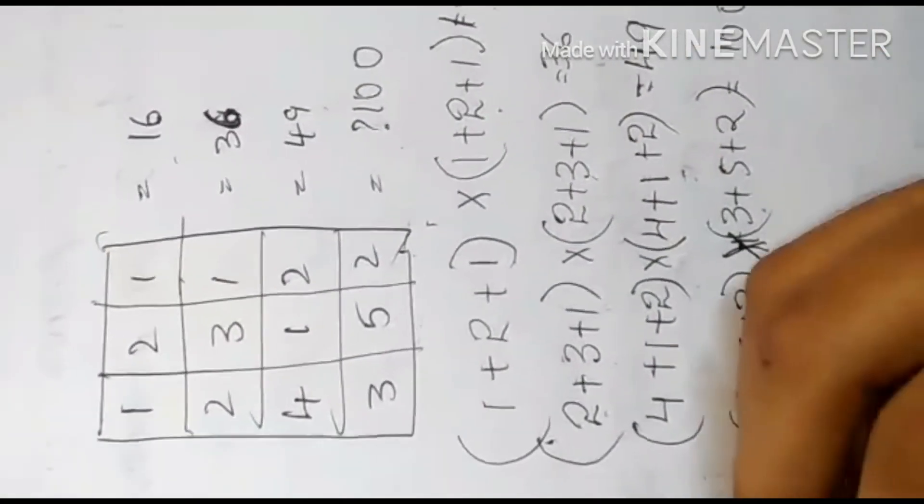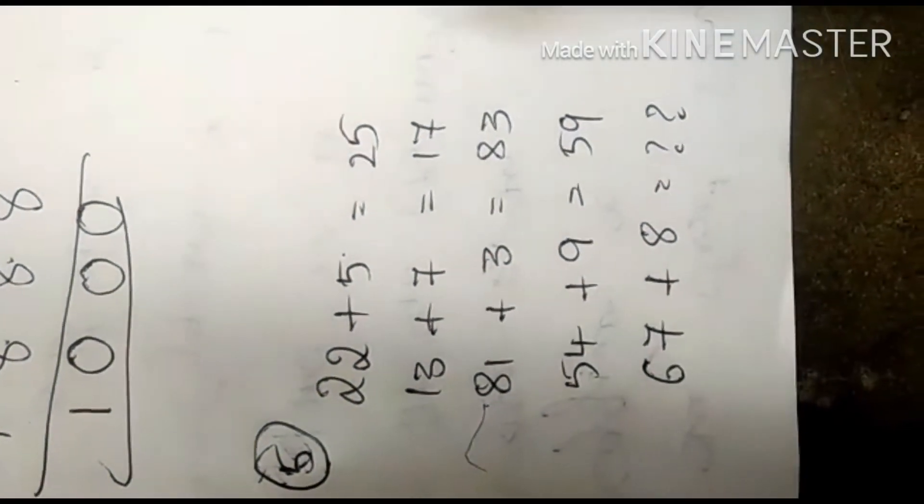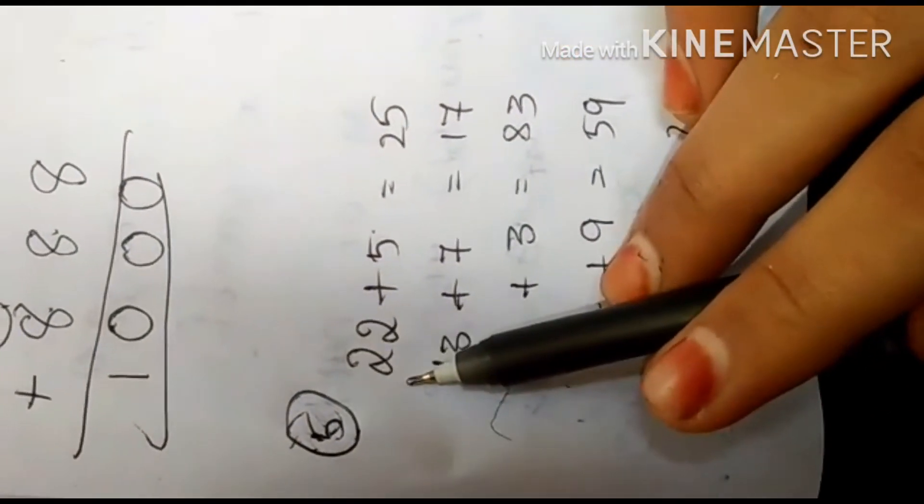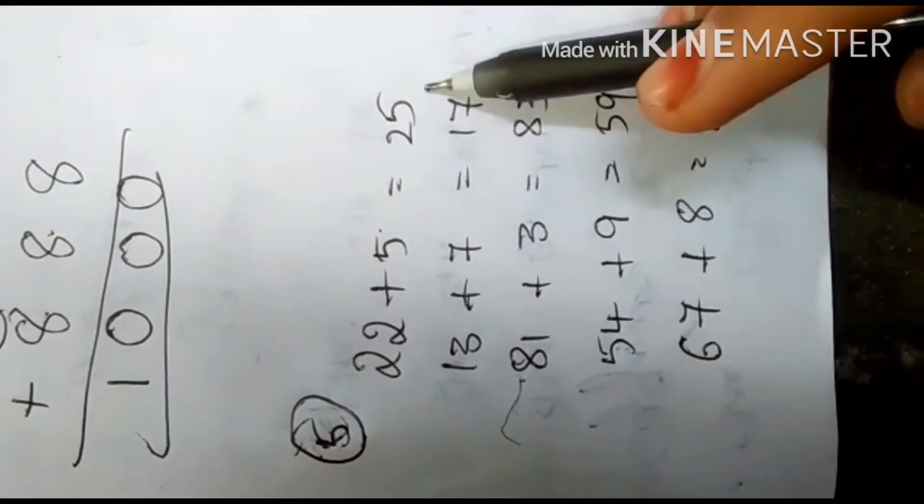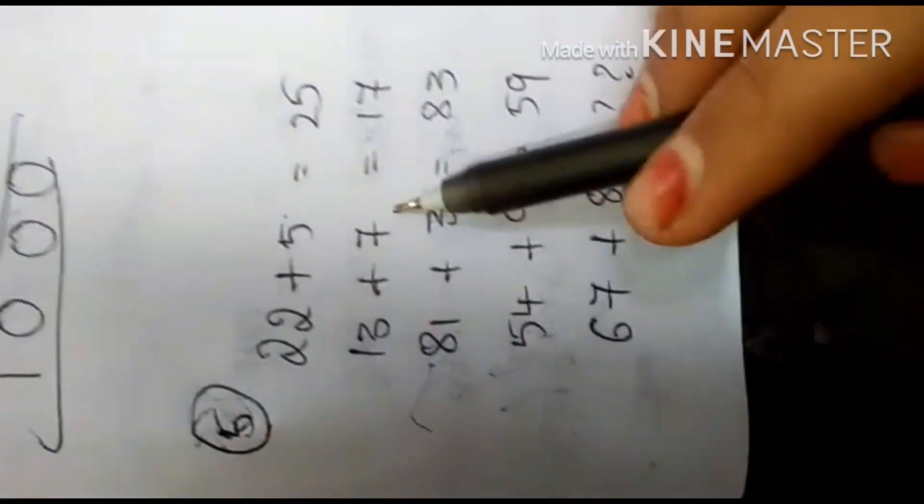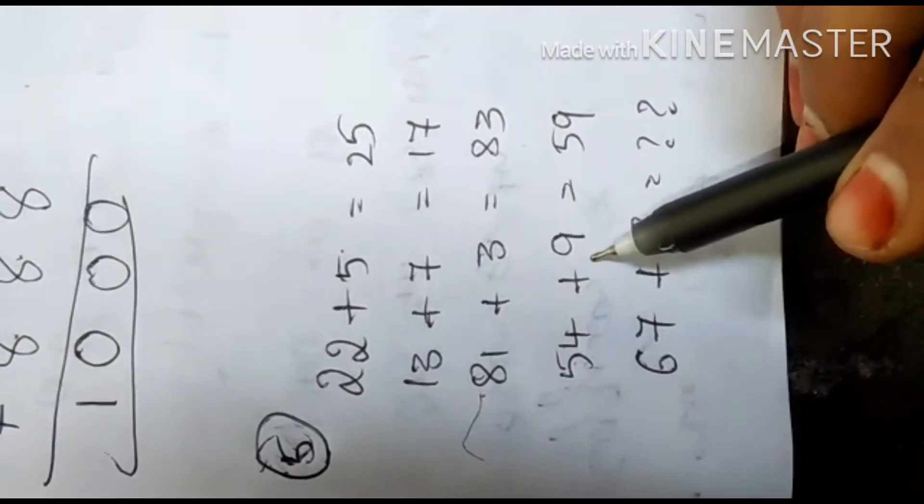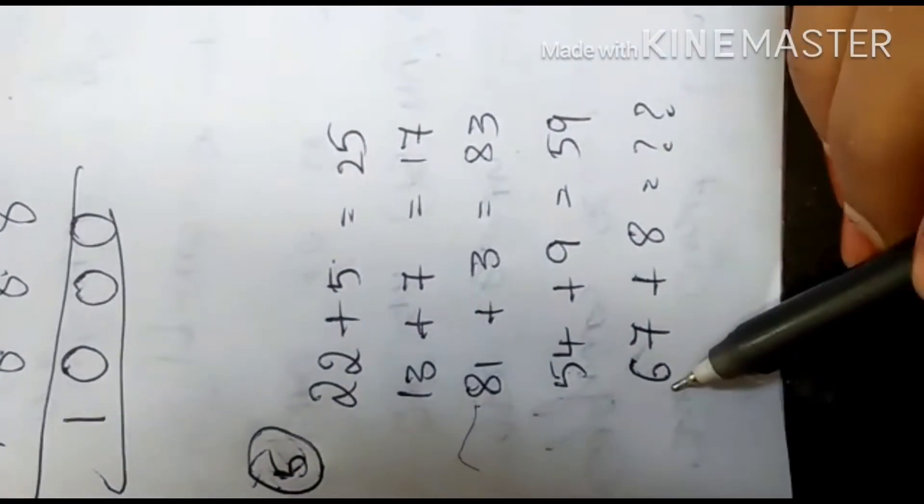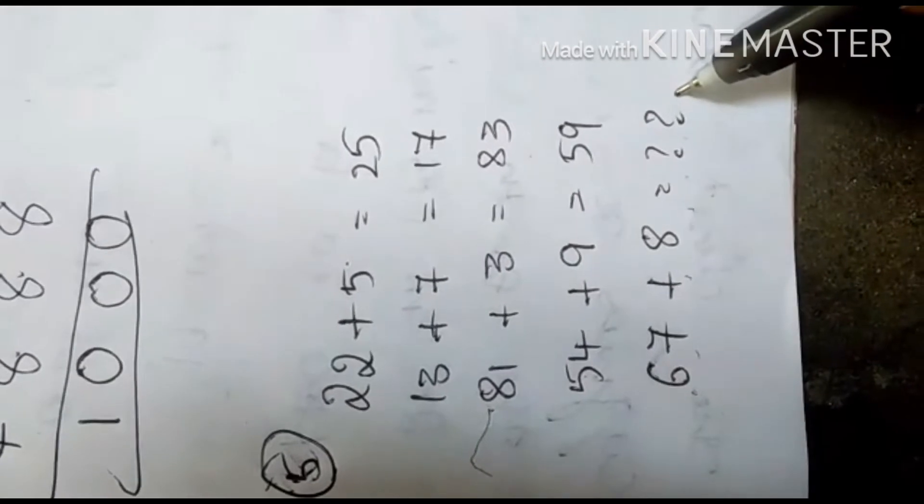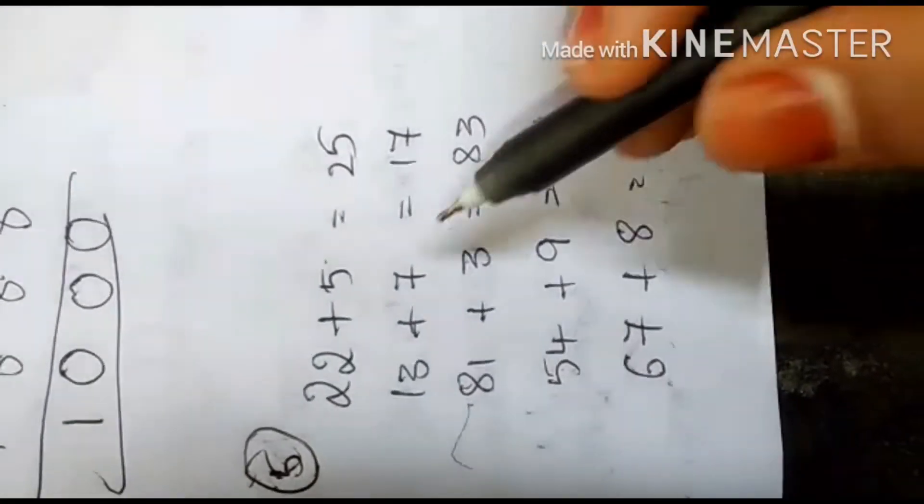And our 5th puzzle is, here is our 5th and last question. 22 plus 5 equals 25, 13 plus 7 equals 17, 81 plus 3 equals 83, 54 plus 9 equals 59, 67 plus 8 equals question mark. We should find this.